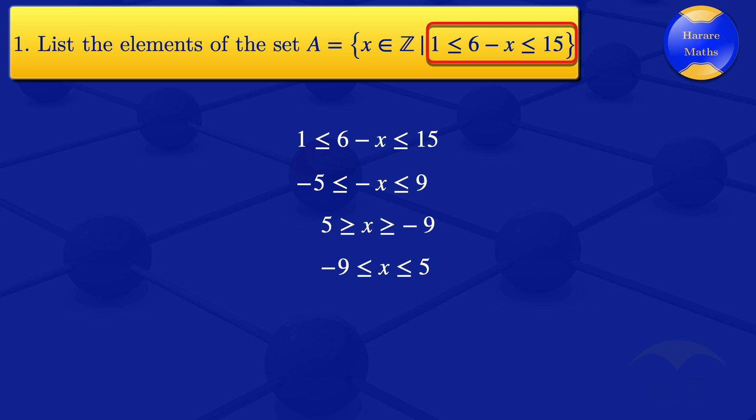Integer values of x there will be minus 9, minus 8, minus 7, minus 6, minus 5, up to 5. So what do we have there? The set A. Yes, elements minus 9, minus 8, minus 7, minus 6, minus 5, minus 4, minus 3, minus 2, minus 1, 0, 1, 2, 3, 4, 5. So that's the set A there.